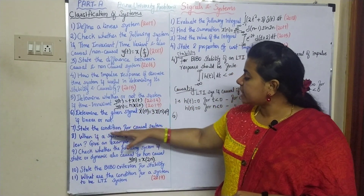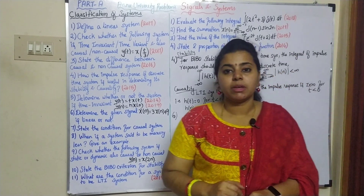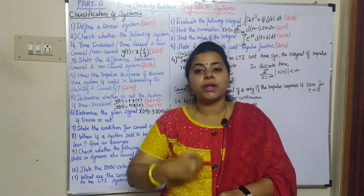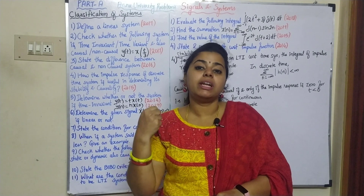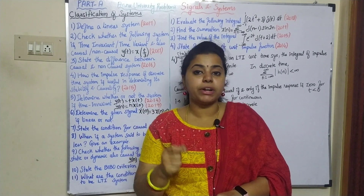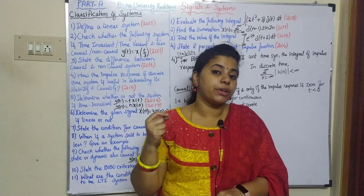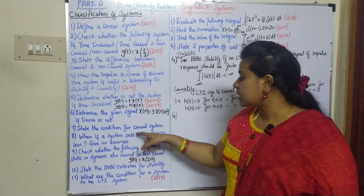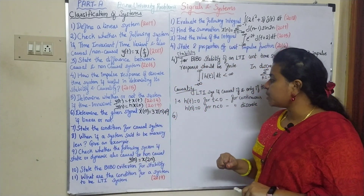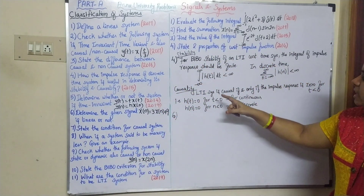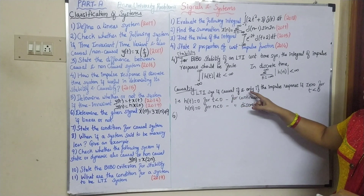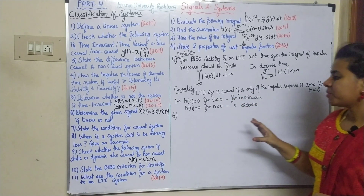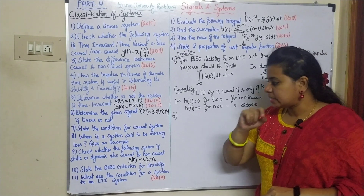Seventh question: state the condition for a causal system. Output depends on present input, past input, or past output - but not future input. The condition: an LTI system is causal if and only if the impulse response is 0 for t less than 0.